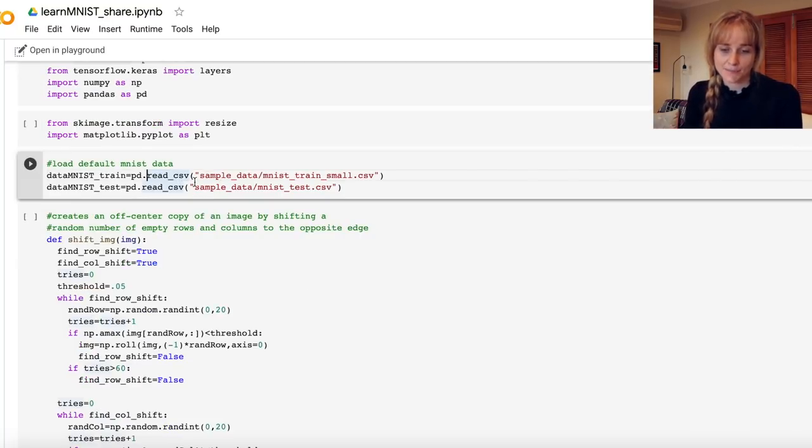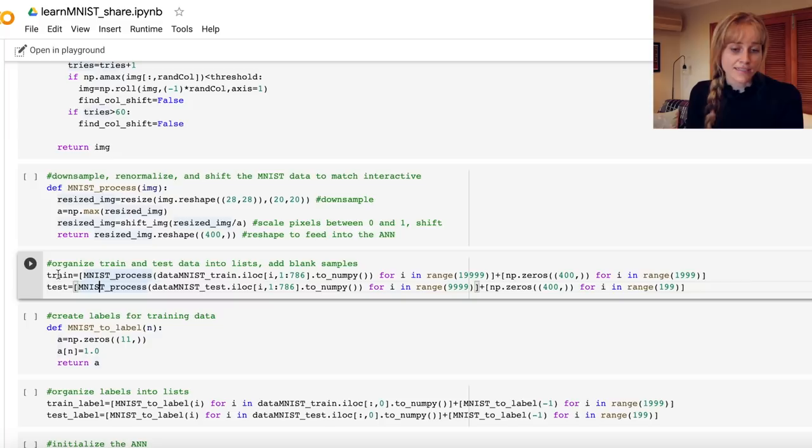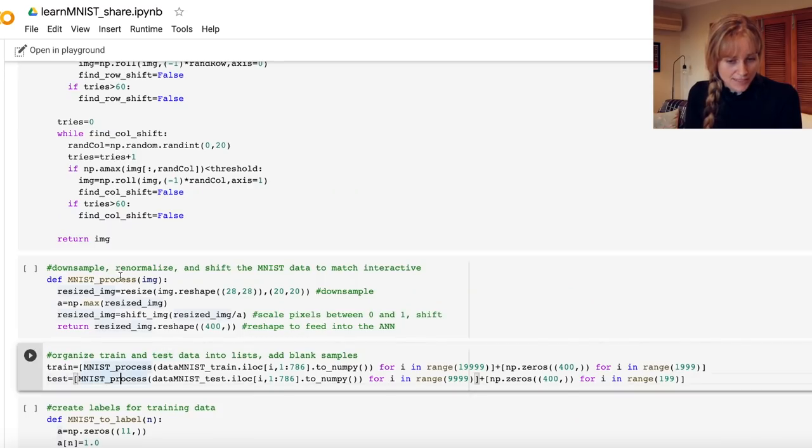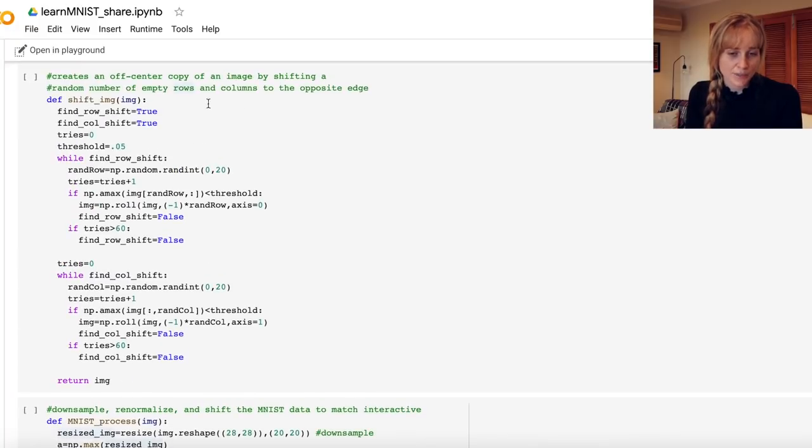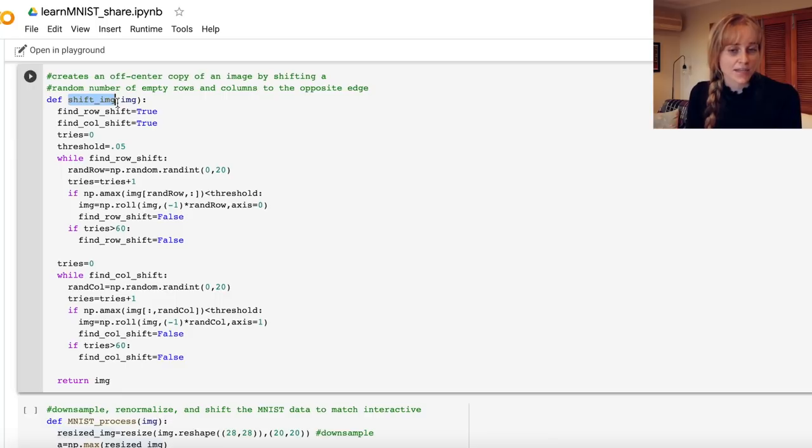The code then moves on to reading in some data. We have some training data and some test data, and actually the data set is called MNIST, which is this big collection of hand drawn digits. I believe it was a bunch of digits drawn by high school students and other people in the US. We'll move down to here where we're making lists for our training and test data, and this processing involves actually calling this function up here which is to shift the image. And that is going to shift around the images in our data set by some random number of empty rows and columns, and that will ensure that the test and training data that we're using is more distributed. Not every digit will be perfectly in the center and they'll be shifted around a bit more, which will hopefully lead to a better performance for our neural network.